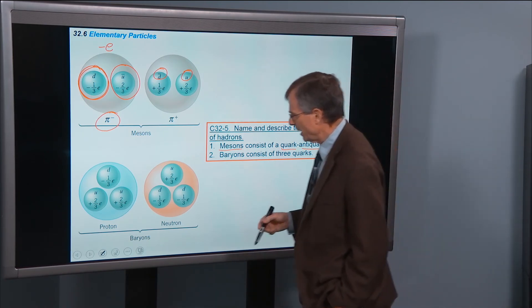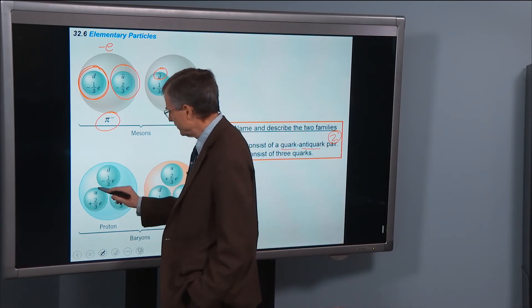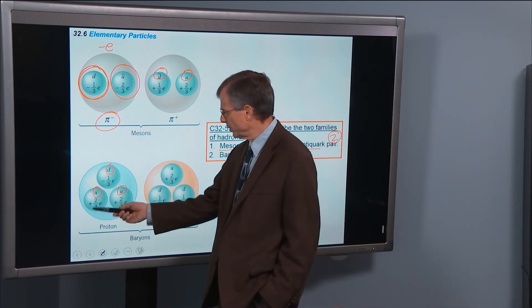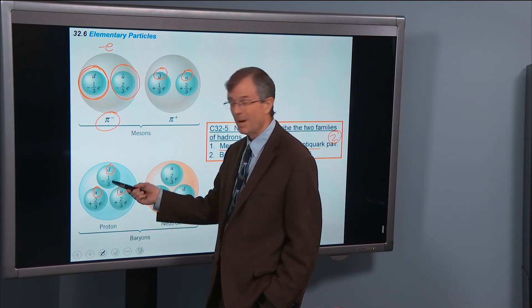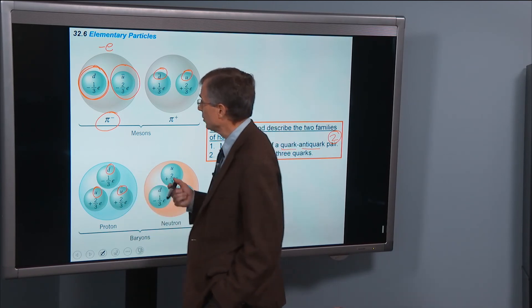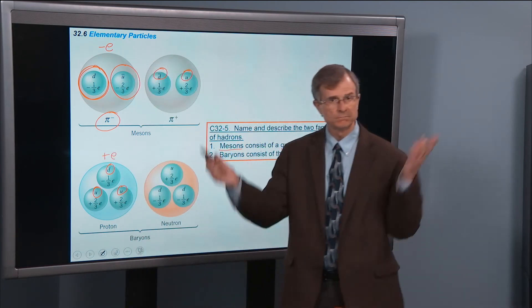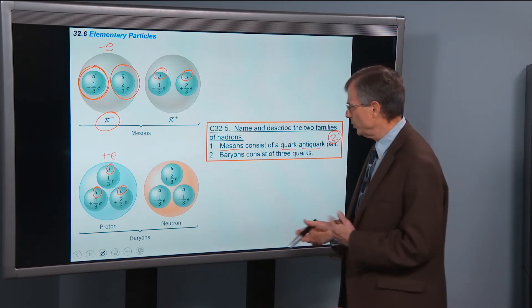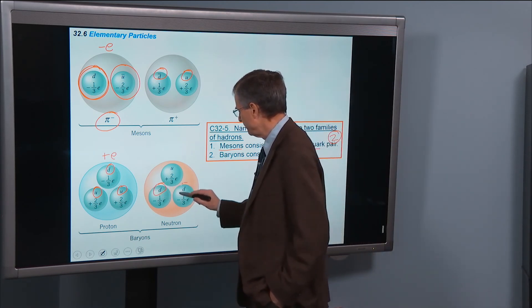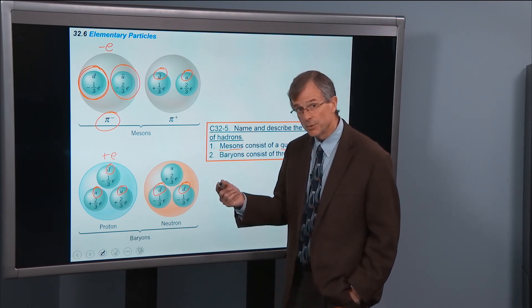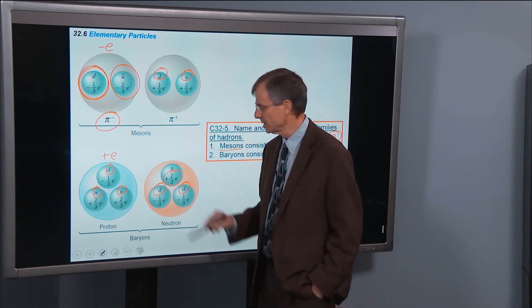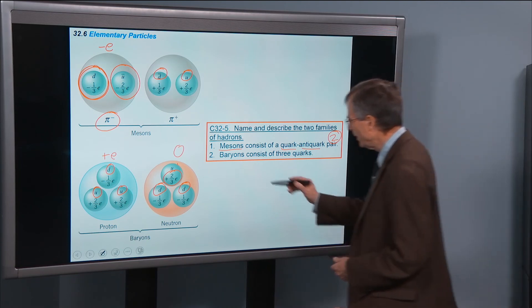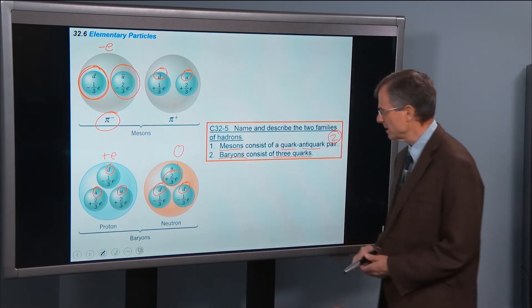What about the proton? Well, it consists of two ups and a down quark. So we've got two-thirds plus two-thirds is four-thirds, minus one-third is one. So its total charge is plus E. I knew that. I knew the charge on the proton is plus E, plus 1.6 times 10 to the minus 19. Neutron is two downs and an up. So you have minus one-third, minus one-third is a minus two-thirds, plus two-thirds gives us zero. So there's no charge on the neutron.